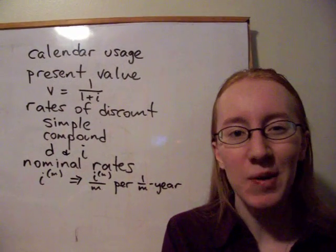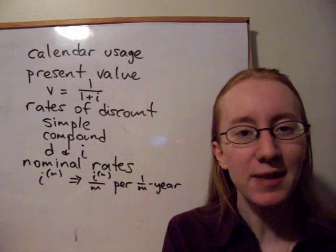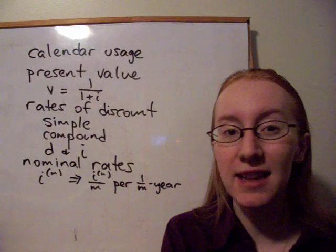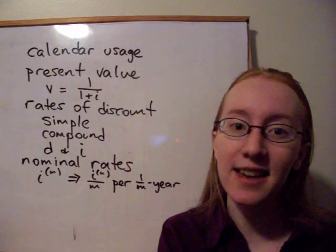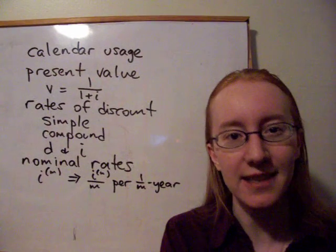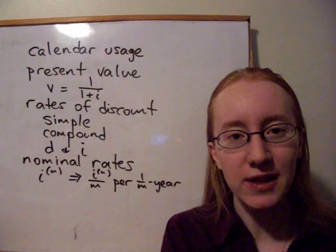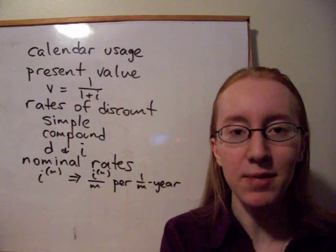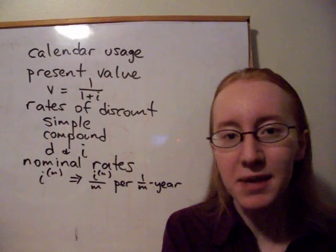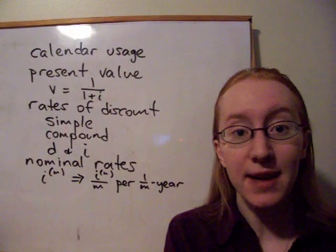The second method is called ordinary simple interest, and that's where we assume that each month has exactly 30 days, and hence a year has exactly 360 days. A little bit weird. So in order to calculate that, we need the number of whole months plus any additional days at the beginning or end, and we divide by 360.